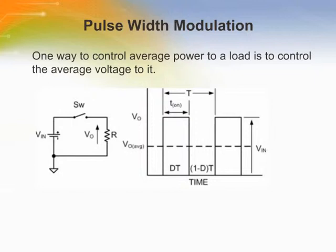By opening and closing the switch, the average voltage as seen by the load resistor R is V sub O average equals V in times D, where D equals T of ON over T. Changing the duty cycle D changes the average voltage to the load. This method of control is known as pulse width modulation, which is used in fixed frequency switching regulators.